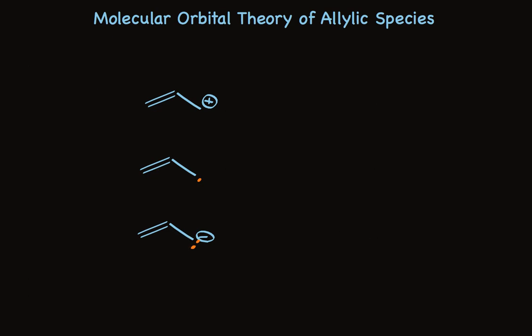For starters, we need to know that each of these species has a p-orbital on each of the three carbons that all can line up and overlap with each other. So, the pi bond has two p-orbitals, one on each carbon, and that end carbon has a p-orbital also.